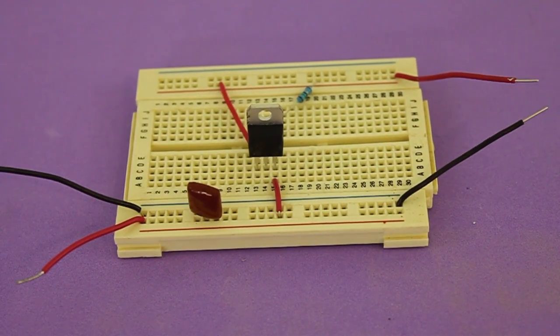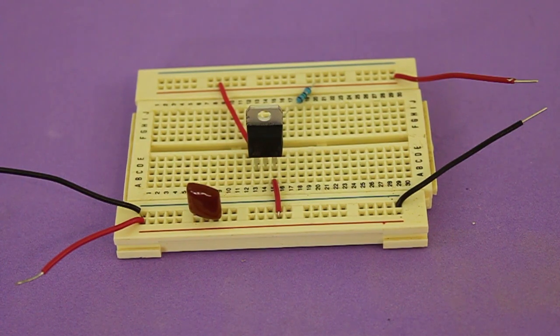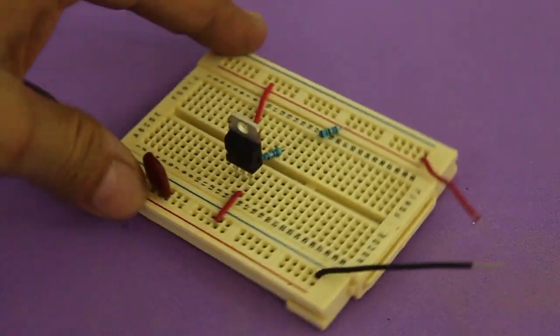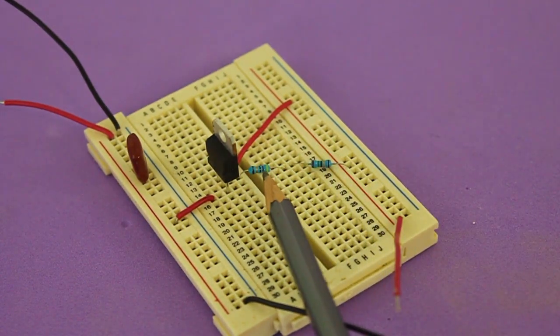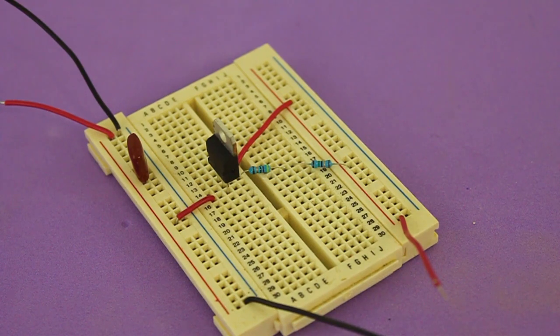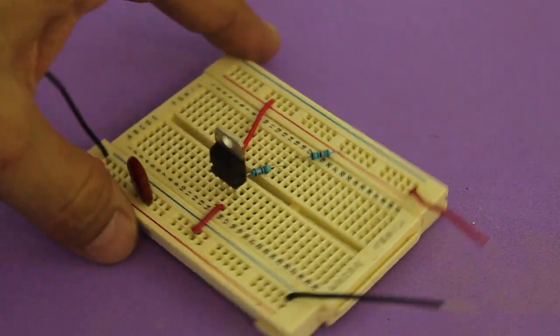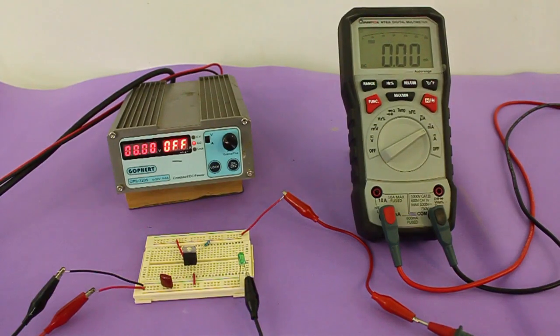And here's the circuit on breadboard. Remember that for 20 milliamps we need a resistor of 62.5 ohms. I am using two resistors in series, one of 47 ohms and the other 15 ohms, which gives 62 ohms, pretty close to the calculated value.